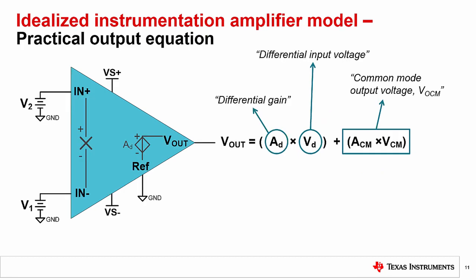However, because of the common mode input signal dependence discussed previously, a non-ideal IA will exhibit some degree of output voltage error. This error, the common mode output voltage, is equal to the common mode gain multiplied by the common mode input signal. The goal of any instrumentation amplifier is to make this common mode output voltage error term as small as possible.